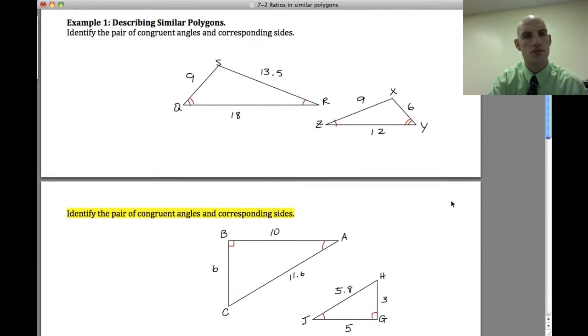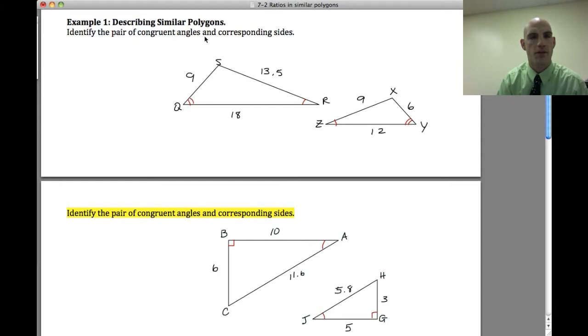So, when we go down here to example one, we're going to be describing similar polygons. Identify the pair of congruent angles and corresponding sides. So, what I'm going to do is I'm going to describe these using what I know. Okay? So, if we look at what's going on here. Angle Z is congruent to angle R. Also, angle Y is congruent to angle Q. And so, we have the third angles theorem in play here. And we can say that angle X is congruent to angle S. Because remember, if we have two angles that are congruent in one triangle, are congruent to two angles in another triangle, then the third angles must be congruent. Because they all add up to 180. So, we have the three angles congruent. Three congruent angles.